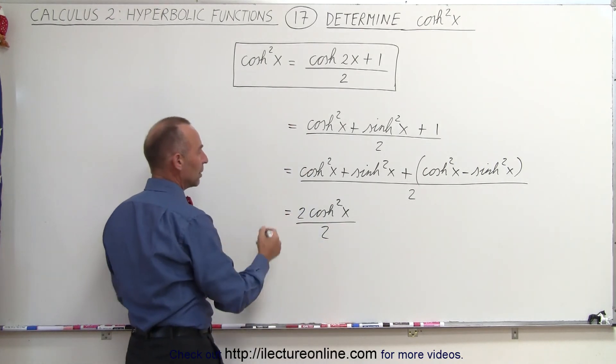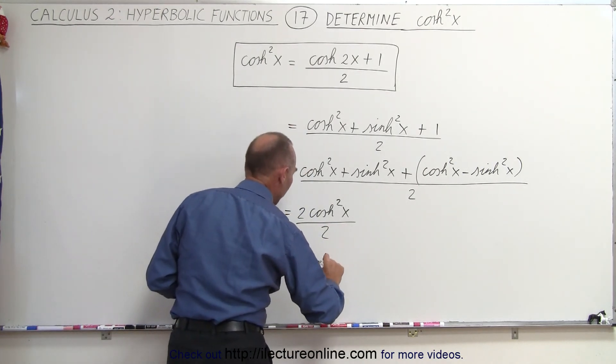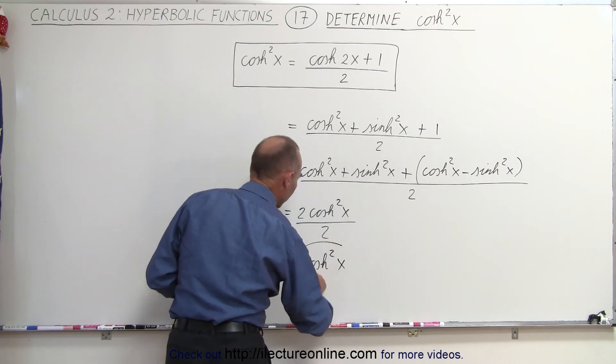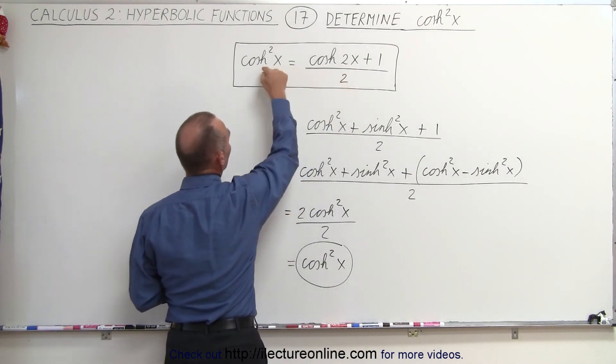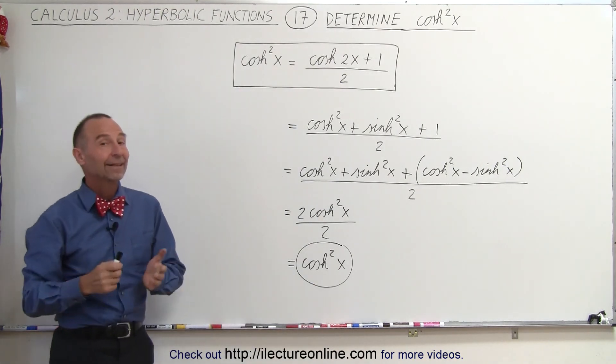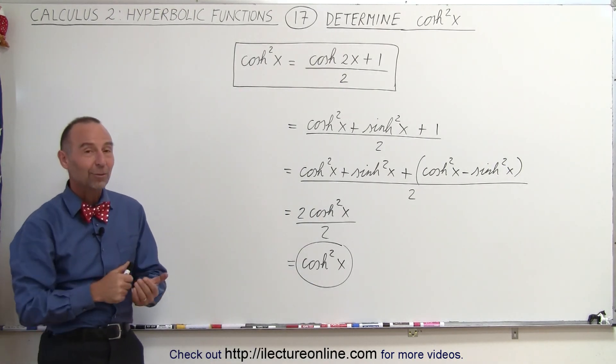Finally, when we simplify that, we end up with the hyperbolic cosine squared of x. This means that what we have on the right side must equal what's on the left side. Therefore, that identity is true. That's how it's done.